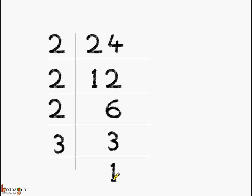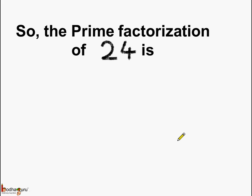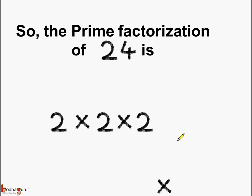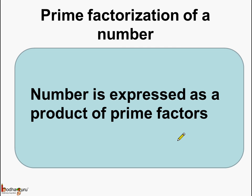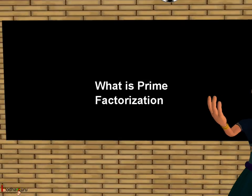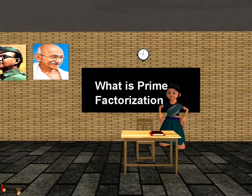So we can stop here and we have got the answer. 24 is equal to 2 multiplied by 2 multiplied by 2 multiplied by 3. So the prime factorization of 24 is 2 × 2 × 2 × 3. Here we did the prime factorization of 24 using the upside down division method. To reiterate, prime factorization of a number means that the number is expressed as a product of prime factors. That's all for now. Bye-bye children.